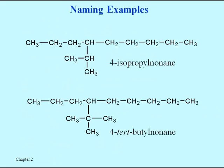This next slide shows some examples. That's a three-carbon chain hanging off of a nine-carbon chain, and since that three-carbon chain has the attachment in the middle of those three carbons, that's why it's isopropyl. The word for the long chain is nonane.